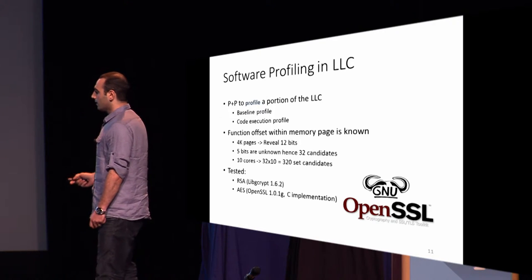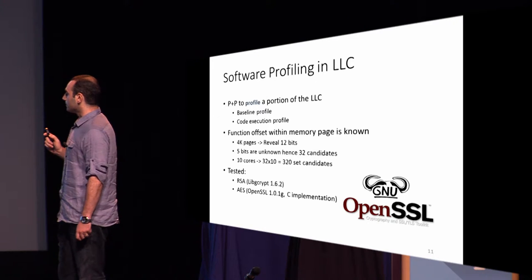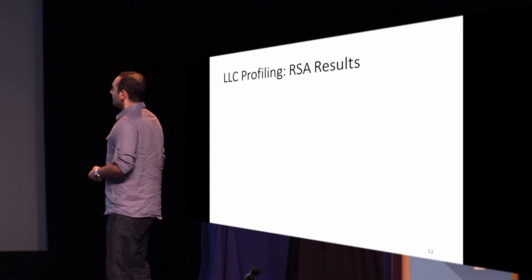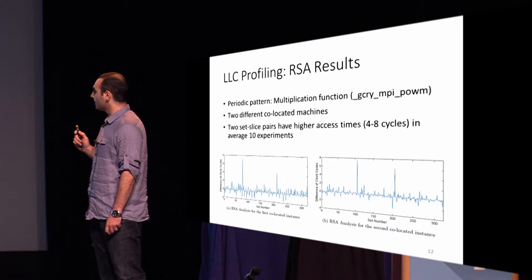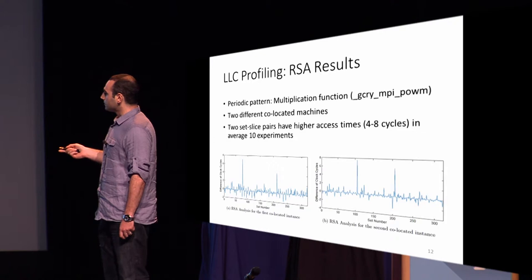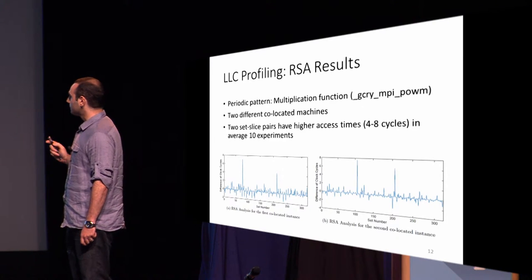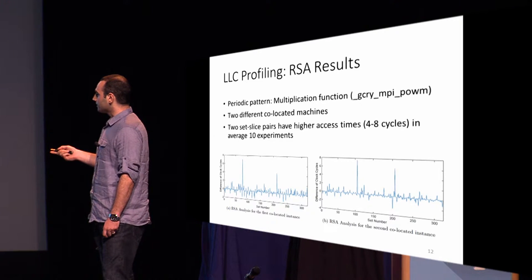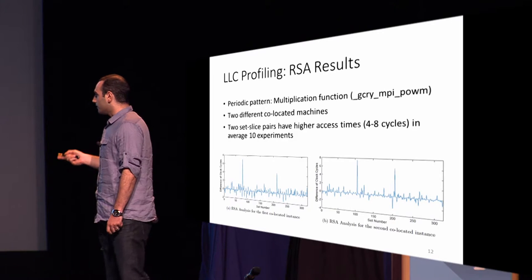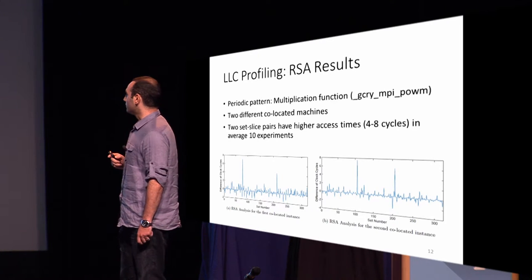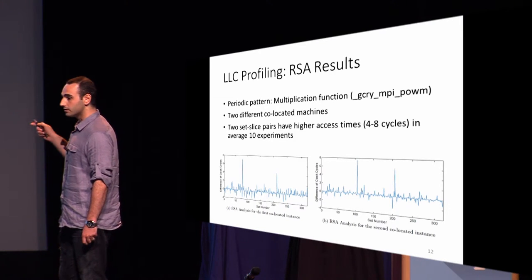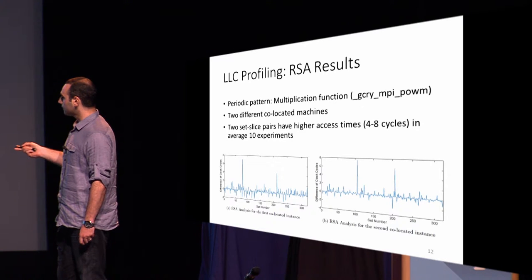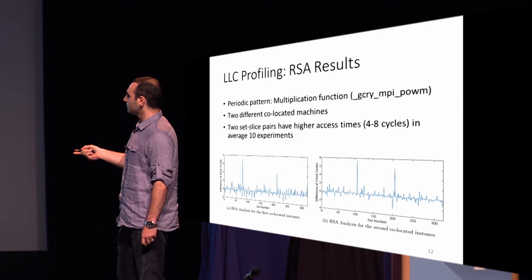We tested this method with the RSA implementation of libgcrypt and an AES implementation of OpenSSL. The result shown here targets the multiplication function of RSA. The two graphs show the difference in access times to specific candidate cache sets: the x-axis represents set numbers from 1 to 320, and the y-axis shows the difference in clock cycles from the baseline profile. In both figures — taken from different virtual machines running on the same physical system — we can clearly see that two of the cache sets were in fact used by the multiplication function.